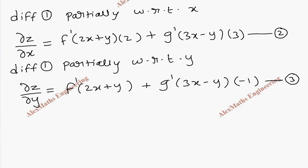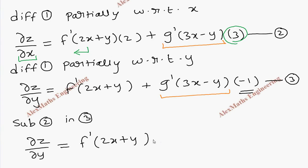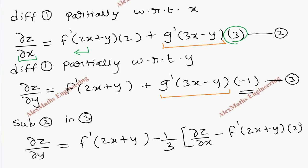Now we are going to substitute from the second expression into the third. Substituting expression 2 into expression 3: the third expression ∂z/∂y equals f′(2x + y) as it is, and in place of g′(3x − y) we write minus 1 by 3 times the bracket — ∂z/∂x minus f′(2x + y) · 2.